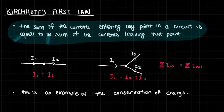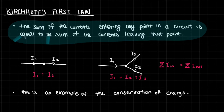I1 equals I2. Whatever goes in from here, what is coming out will equal what went in. So nothing is lost, nothing is slowed down. Remember, current is the charge over time, so nothing is slowed down or sped up — it stays the same. The same amount of charge takes the same amount of time to move. So we have I1 equals I2 plus I3.